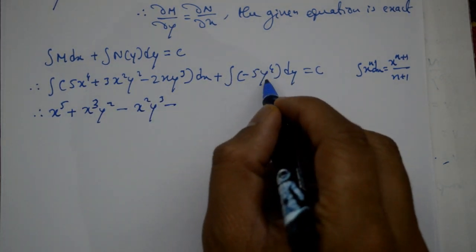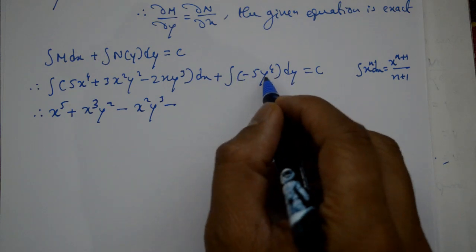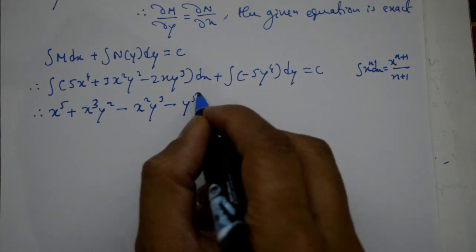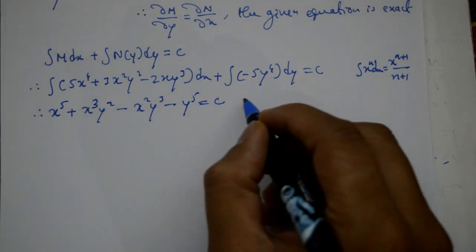Then minus y^4, integrate y^4 with respect to y gives y^5/5, 5 and 5 cancel, so y^5 equal to c, the integral constant.